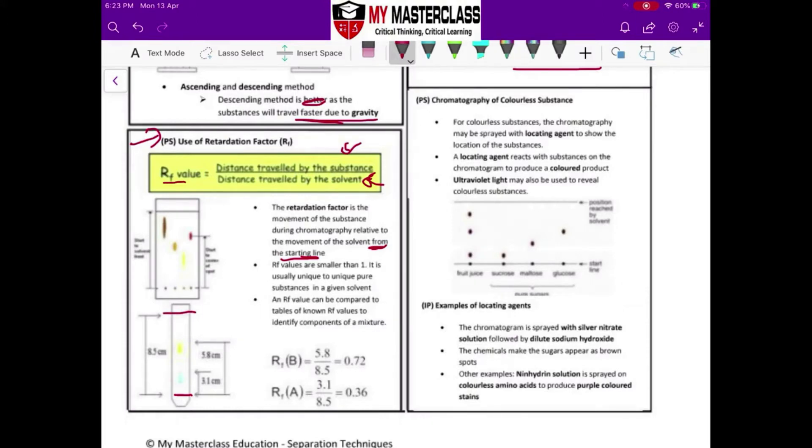So distance moved by the solute, the blue dot over here, 3.1 cm. This one is your A. 3.1 cm divided by 8.5 cm.